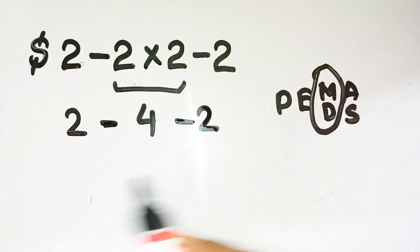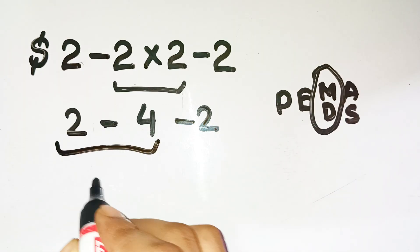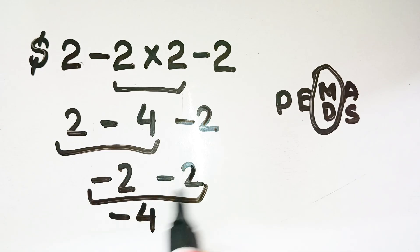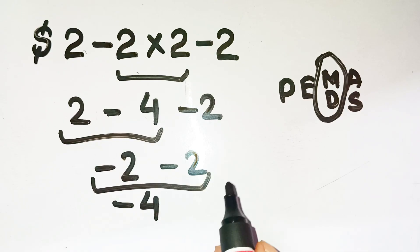From here, go left to right. Two minus four gives negative two. Then negative two minus two gives negative four. So the correct answer is negative four, not zero dollars.